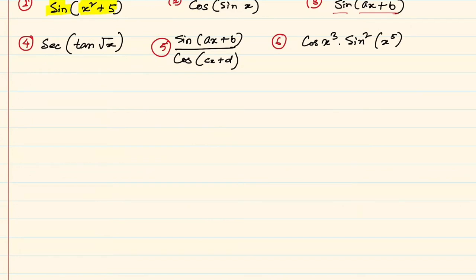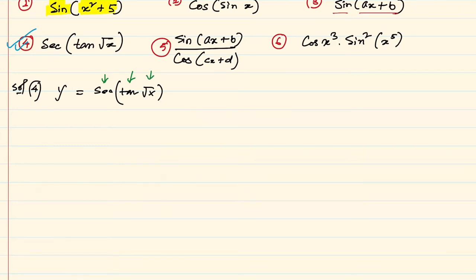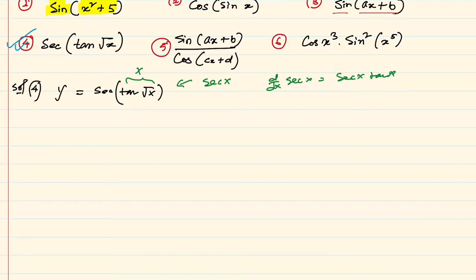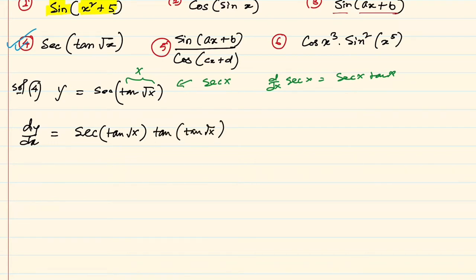Now question number 4: y = sec(tan(√x)). Here you see it consists of three functions: sec, tan, and √x itself. In order to differentiate it, we consider the whole inner part as x, assuming this as sec x. We know the derivative of sec x is sec x·tan x.